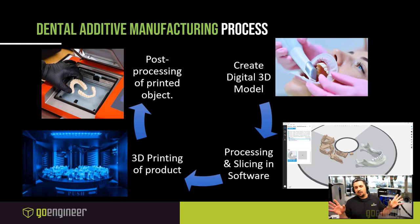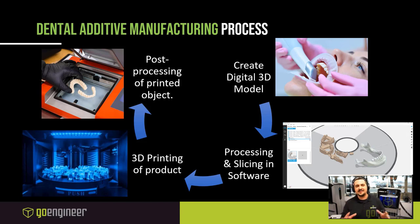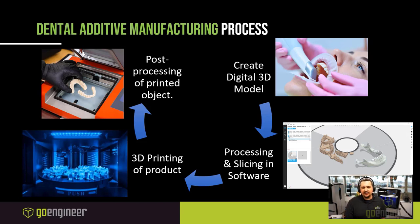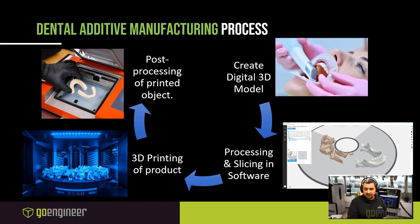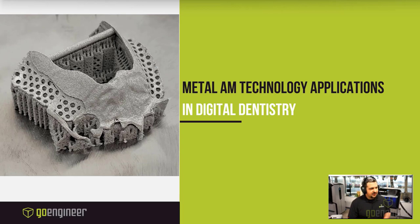Regardless of the technology — PolyJet or metal — the workflow is essentially the same. It all starts with creating a 3D model using an intraoral scanner, then processing and slicing the model in software, 3D printing the physical product layer by layer, and finally performing technology-specific post-processing. The way you remove support material from a PolyJet model differs from a metal system, but either way some post-processing is involved.